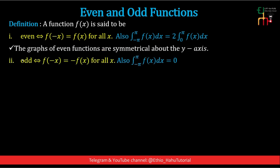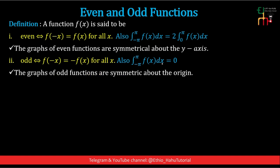A function is said to be an odd function if and only if f(-x) is equal to -f(x) for all x. Also, the integral of an odd function f(x) dx from -π to π is equal to 0, because the graph of odd functions are symmetrical about the origin.